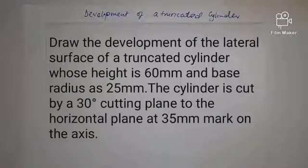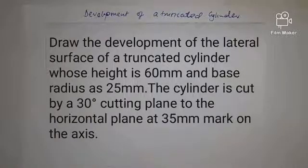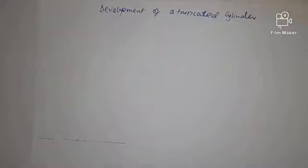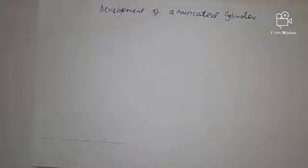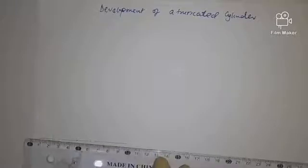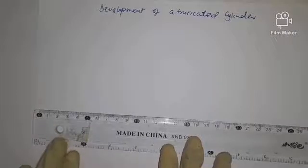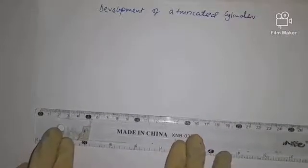Our front view gives us the truncated part of the cylinder. We shall first draw the whole cylinder's front elevation, which is a rectangle, then truncate it with the cutting line. From there we develop the lateral face of the truncated part. Let's first draw the plan, which is a circle of 25 millimeter radius. We project lines from the circle upwards to come up with our front elevation, and we draw our XY plane where we shall put our front elevation.